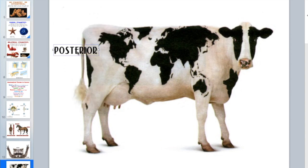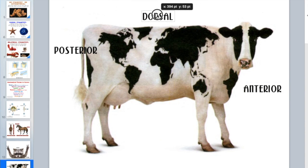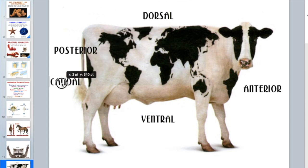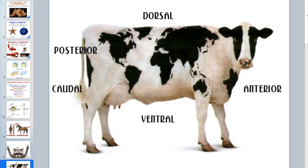Looking at a cow diagram: posterior is the back, anterior is the front, dorsal is the top or backbone area, and ventral is the belly. Additional terms include caudal, meaning the tail region (also posterior), and cephalic, meaning the head region.